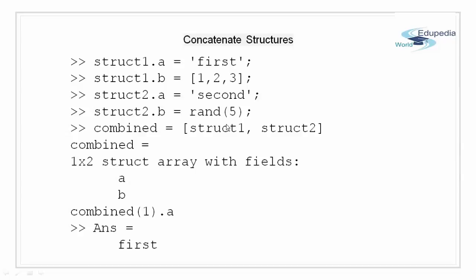Concatenate the structures. Just like numeric and characters and other classes that we have seen we can concatenate structures in the similar way. So using concatenate operator that is square brackets I have shown here how we can concatenate structures. Here I have a structure 1 with fields A and B with content of string first in A and array with elements 1 2 3 in B. Similarly I have structure 2 with fields A and B with string second in A and a random number in field B.